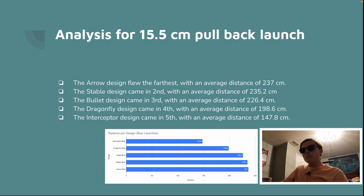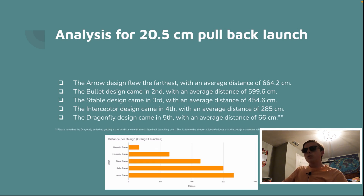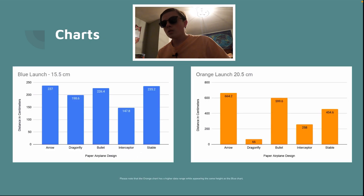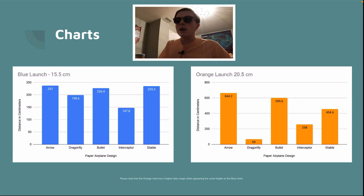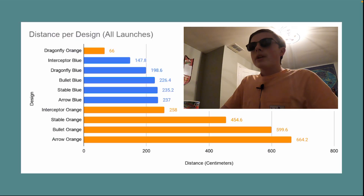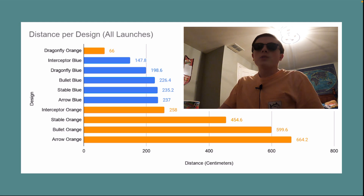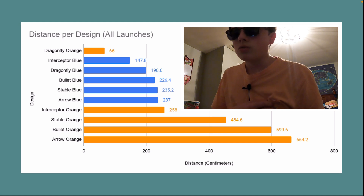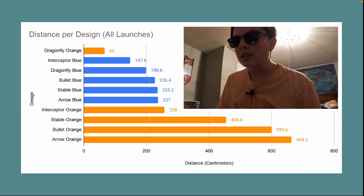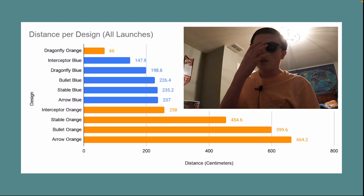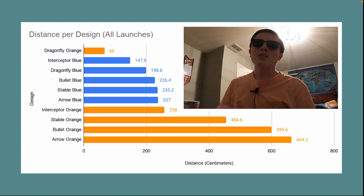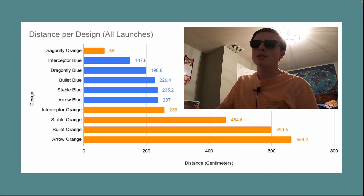You can see the analysis for the blue pullback distance and the orange pullback distance in the charts. The blue chart appears to go higher, but you must look at the numbers — the orange numbers go to a higher range than the blue. The dragonfly orange was the worst of all, and it was actually being pulled back from a further distance than the dragonfly blue. The arrow performed best for both pullback distances — this is probably why it's used so often, because it's convenient to make and it flies well.